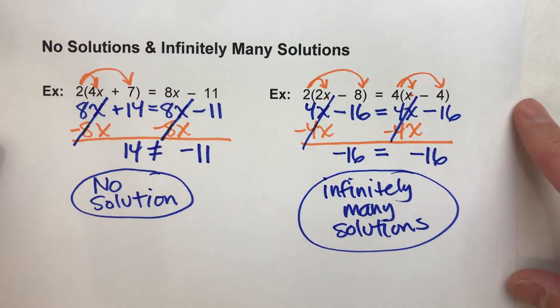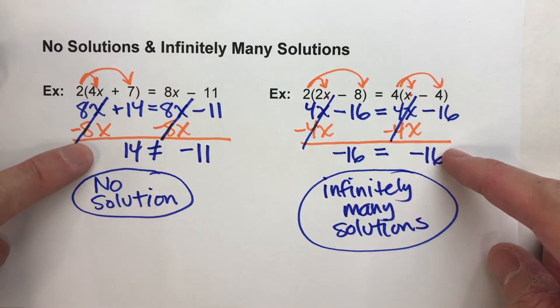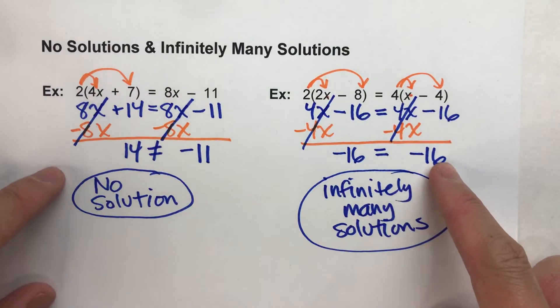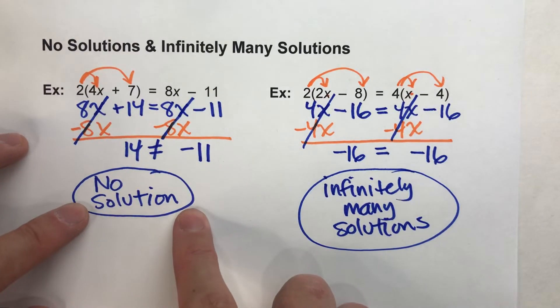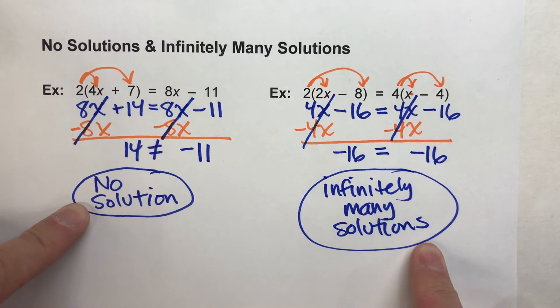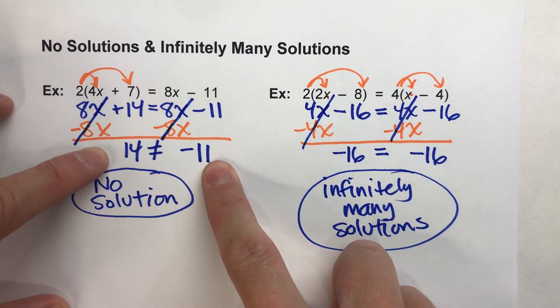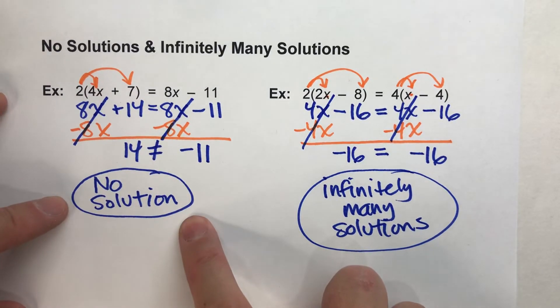So when you're solving algebra equations and you get to a point where there's no x's and you just have a number equal to another number, you're going to have either no solutions or infinitely many solutions. And it's just a matter of, is the number equal to a different number? Which can't be true, so there's no solutions.